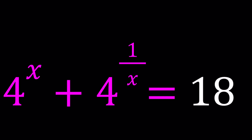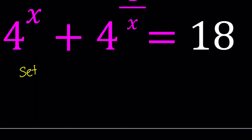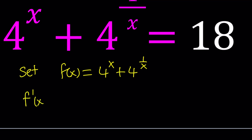Set f of x equal to 4 to the x plus 4 to the power 1 over x, and then go ahead and differentiate this expression. We're going to be looking at the behavior of this function — whether it has a maxima or minima. The first derivative gives us a lot of good information about whether the function is increasing or decreasing on an interval, if it has any horizontal tangents, and so on.